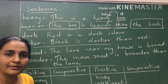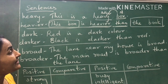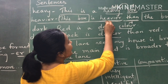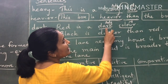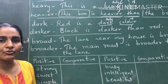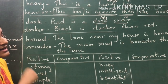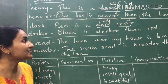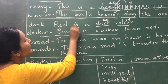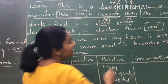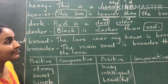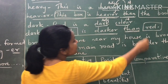Another example with 'dark': 'Red is a dark color' — positive degree, talking only about red. For comparative: 'Black is darker than red' — comparing black and red, using 'darker than.' So 'darker' is the comparative degree, and again followed by 'than.'